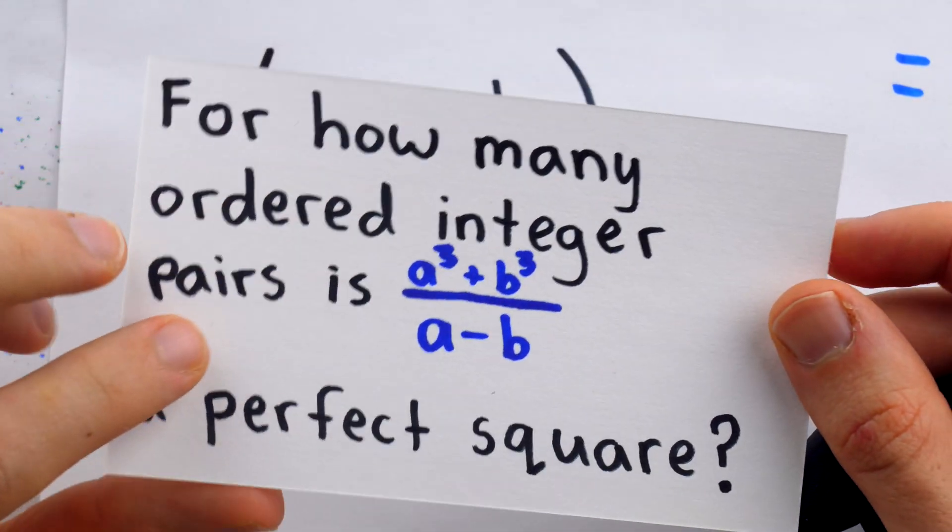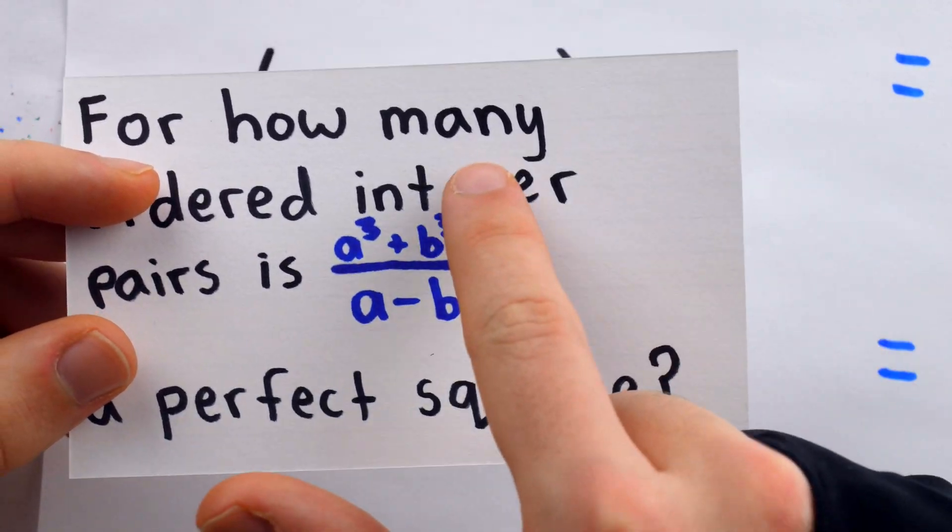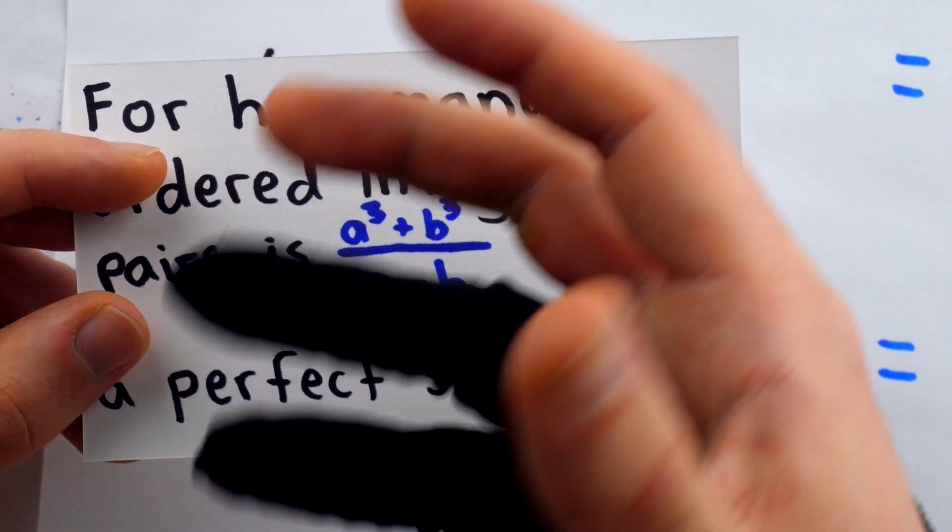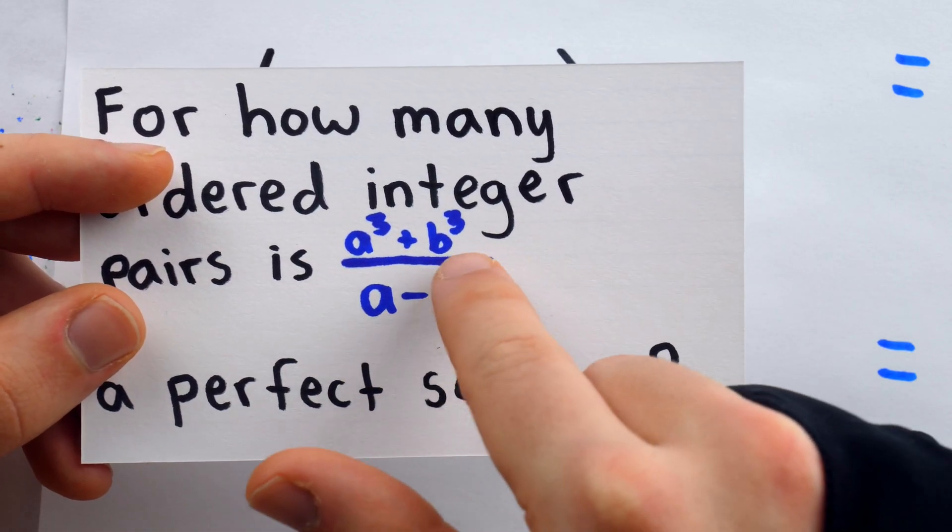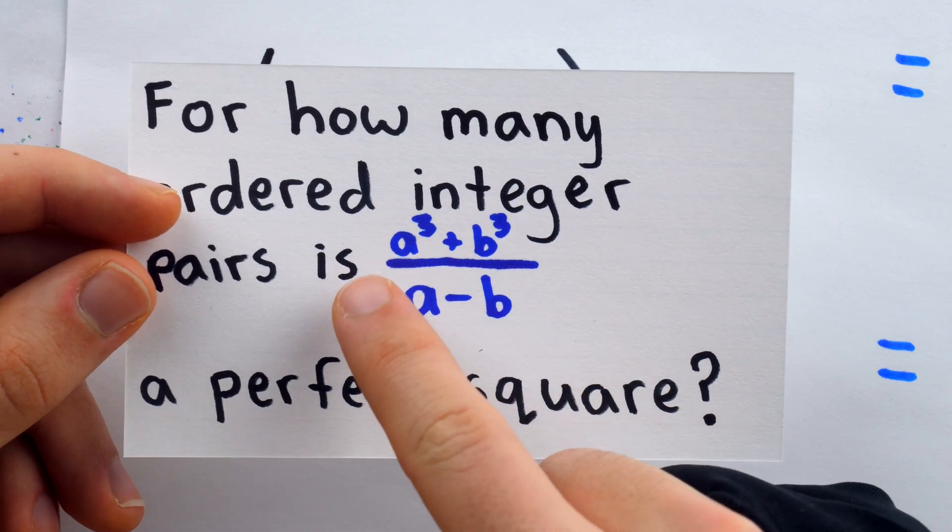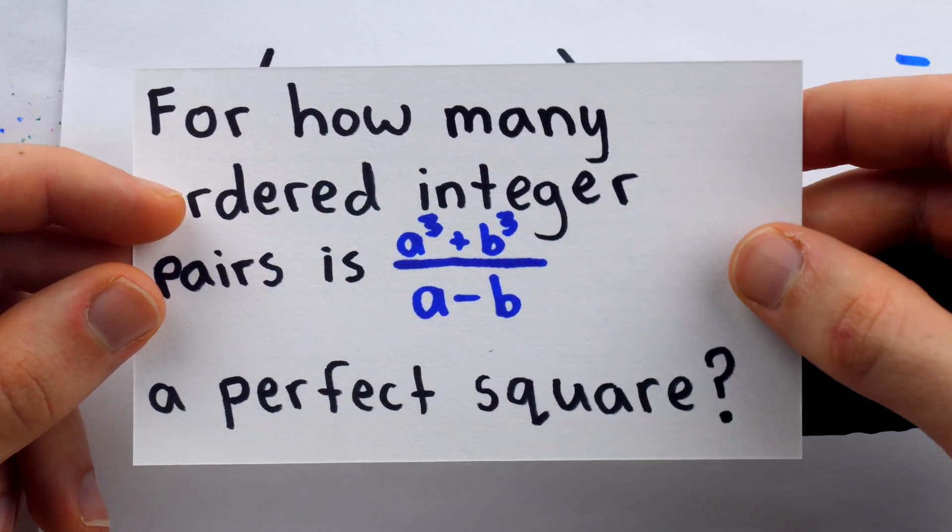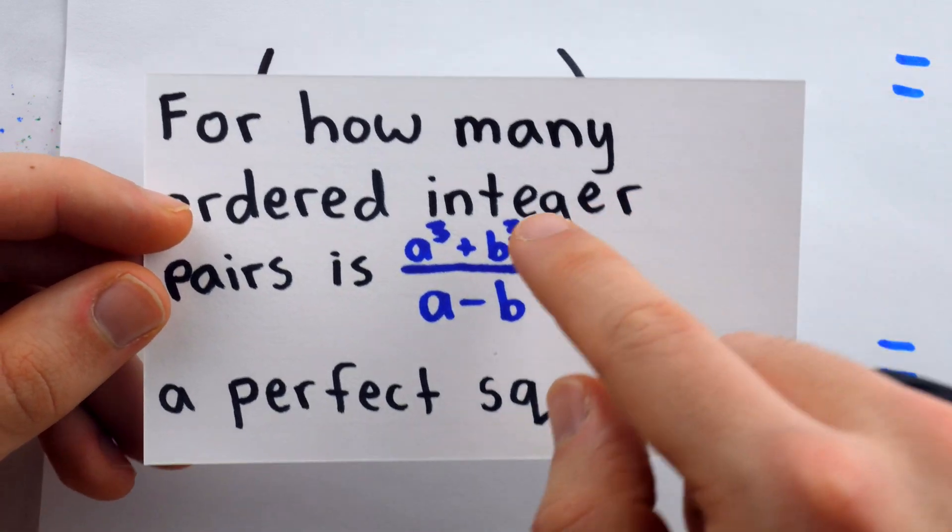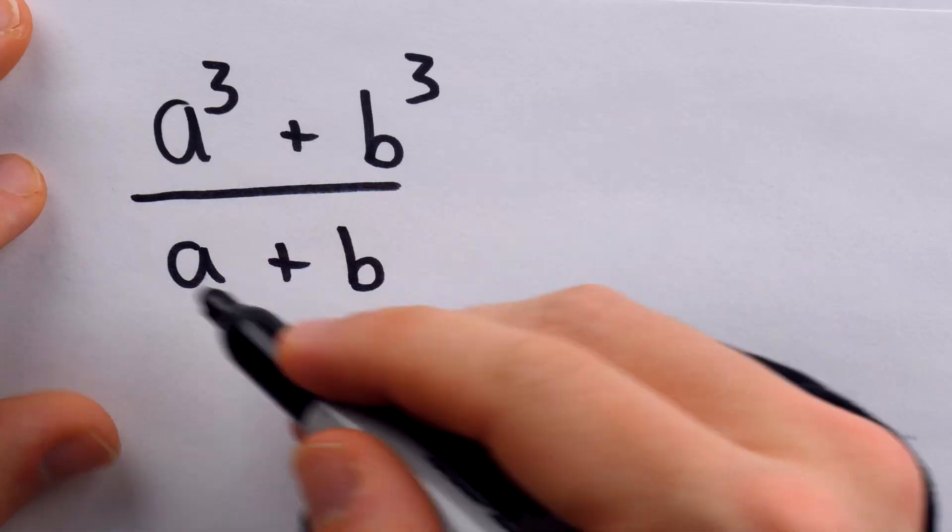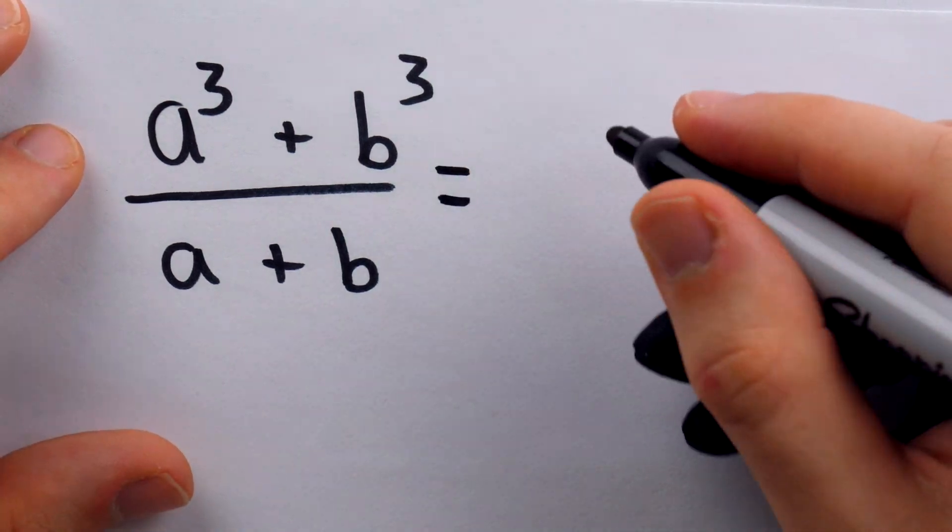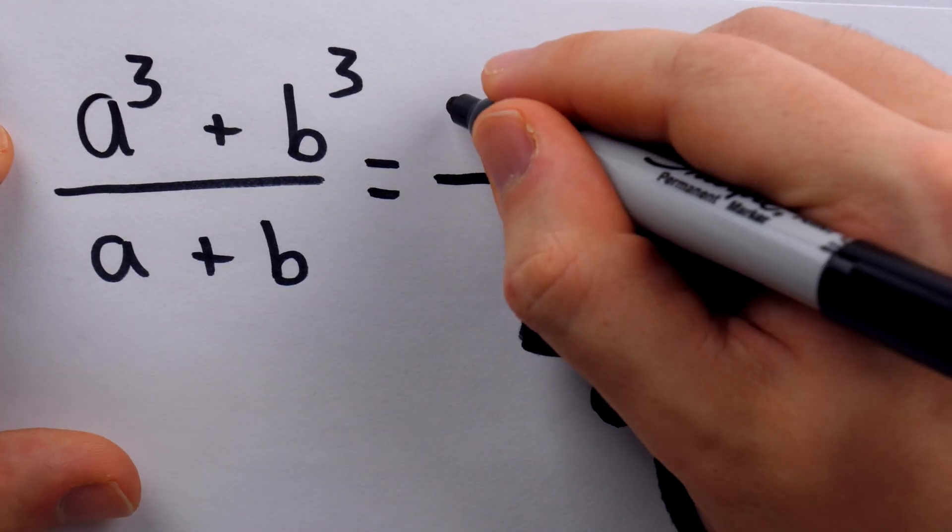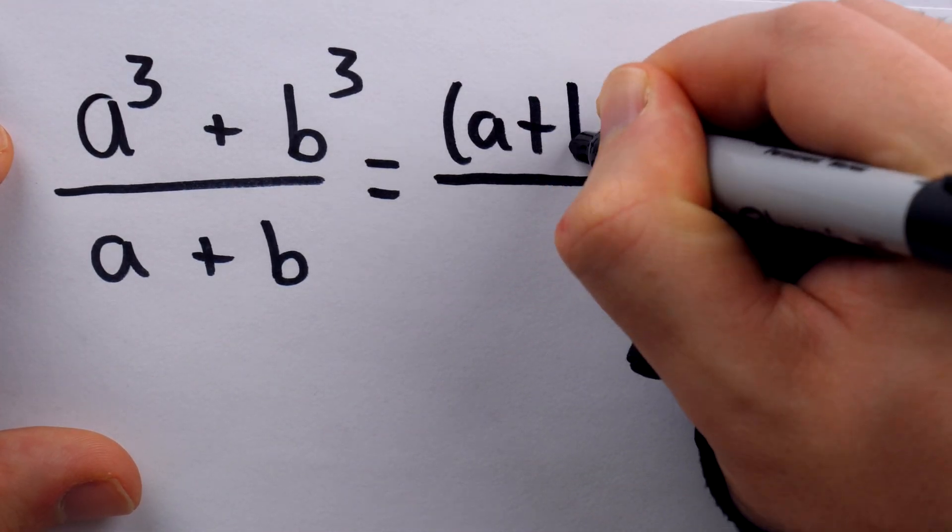Now, when you first saw this expression, you might have mistakenly tried to factor the sum of cubes in the numerator and get some cancellation. That won't work because the denominator is a - b, not a + b. But what if this denominator was a + b? And we were asked the same question for how many ordered integer pairs is this expression, but with a + b, a perfect square. If the denominator was a + b, then indeed, we could start by factoring the numerator.